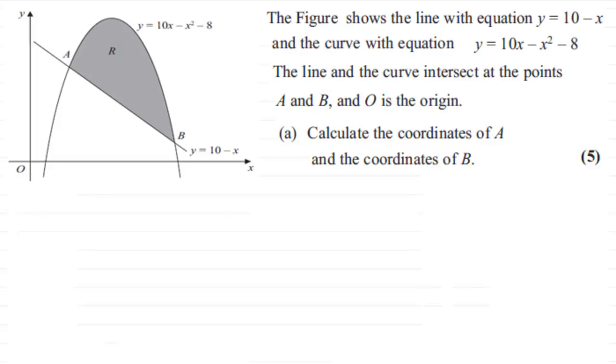Well, when you're trying to find out the points of intersection between any two graphs, what we do is we do simultaneous equations. So I'm going to write those equations down first of all. We've got y equals 10 minus x for the equation of the straight line and for the parabola that is y equals 10x minus x squared minus 8. And because we're dealing with simultaneous equations, it's a good idea to number them. So I'm going to call them equations 1 and 2.